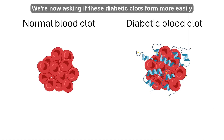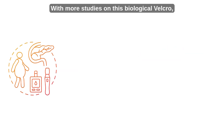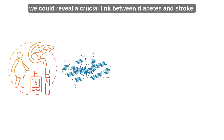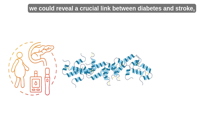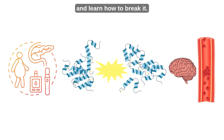We're now asking if these diabetic clots form more easily or resist breakdown, and if their overall chemistry is different. With more studies on this biological Velcro, we could reveal a crucial link between diabetes and stroke, and learn how to break it.